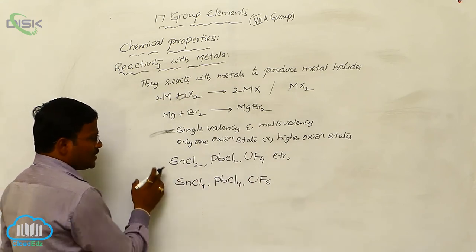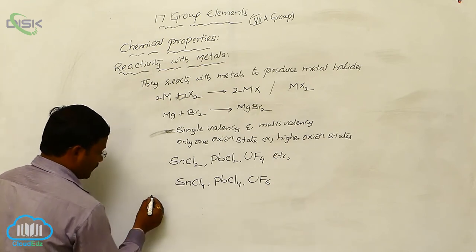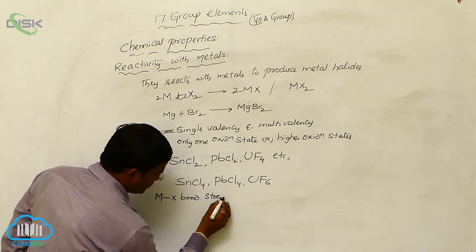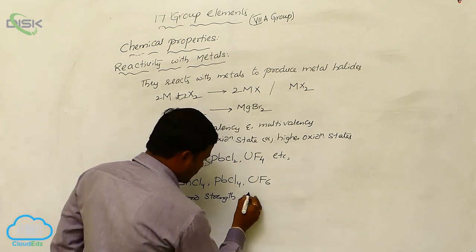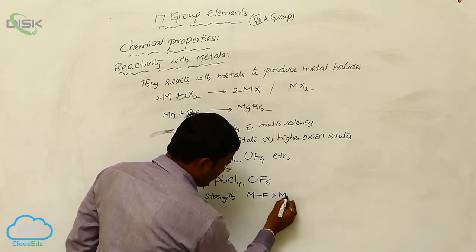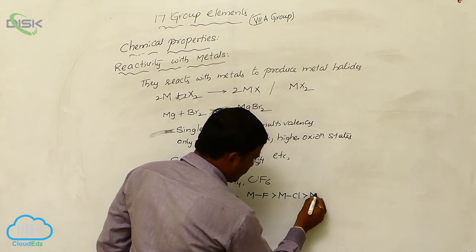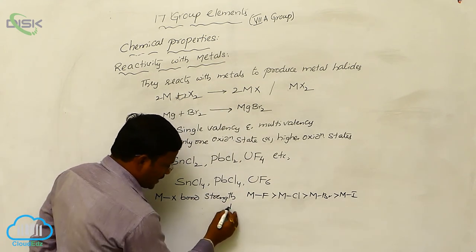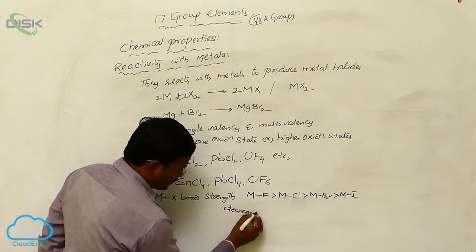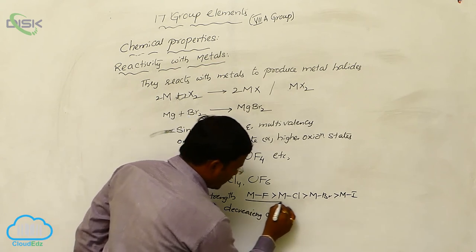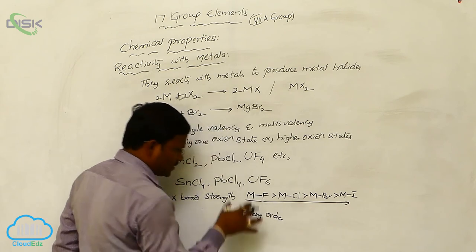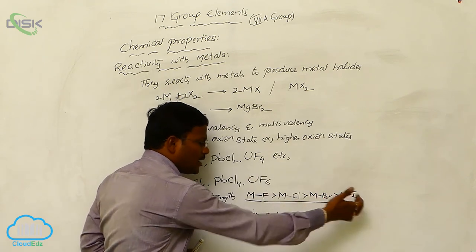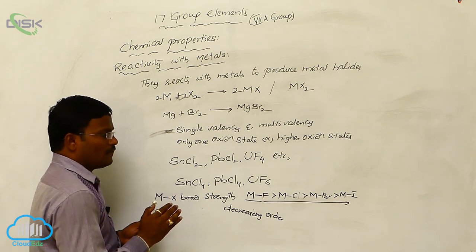Due to multi-oxidation states, different types of halides are produced. The M-X bond strength decreases from fluorine to iodine: M-F > M-Cl > M-Br > M-I. So the metal-fluorine bond is the strongest, and the metal-iodine bond is the weakest. This is the chemical reactivity of halogens with metals.